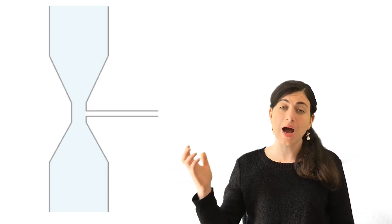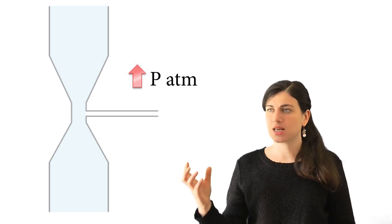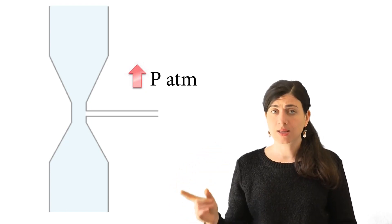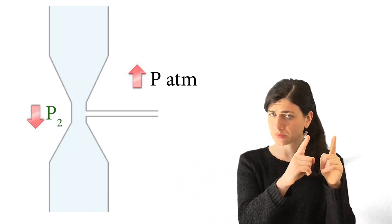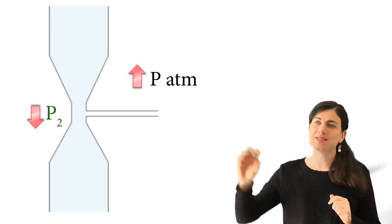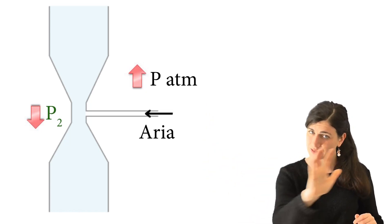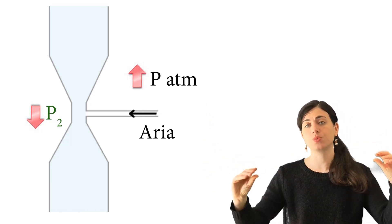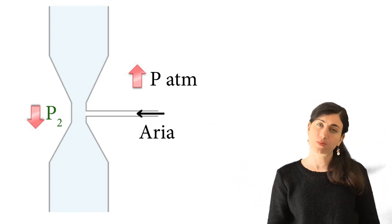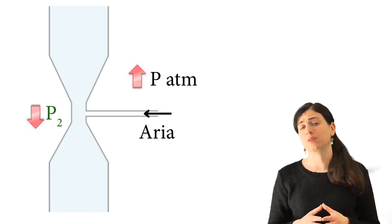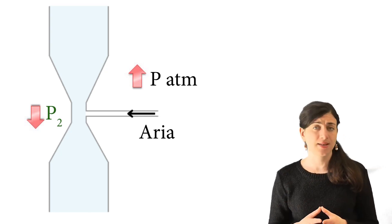...since the pressure outside, so the atmospheric pressure, is much higher than the pressure in the narrowing, what will happen is that the air from the outside will be sucked inside our tube and will go in our pipe.